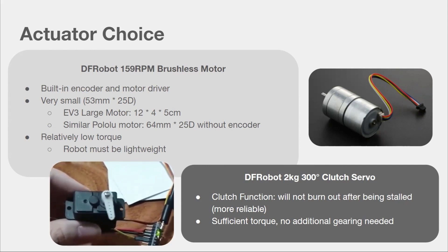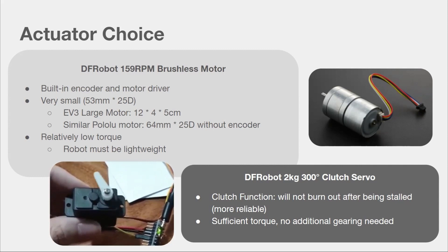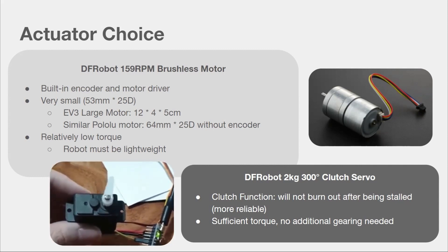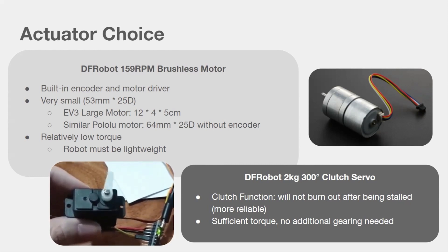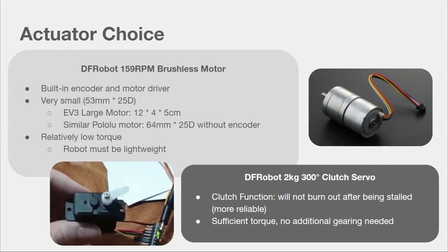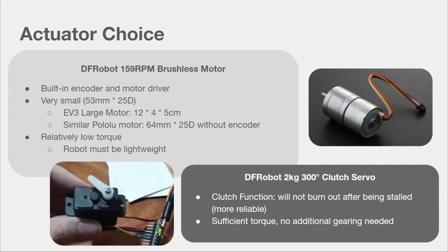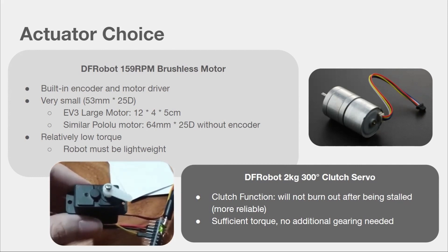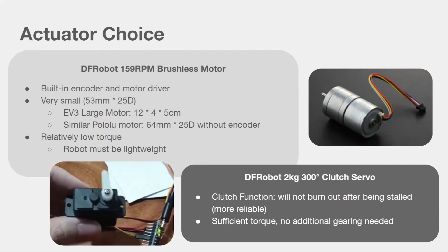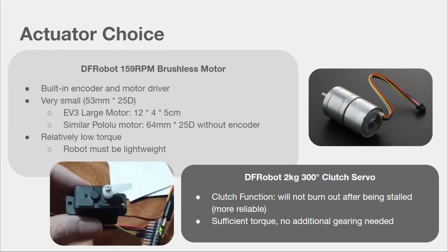For movement, we used this DFRobot motor because it's small and has a built-in encoder and motor driver, so we would not have to create extra space for them or add wiring. But they are relatively low torque, so we had to make sure everything else in the robot was as light as possible. For our claw mechanism, we used this DFRobot clutch servo. Normally servos have to be stopped to grip objects tightly, but this can create heat and cause them to fail. Clutch servos won't burn out when being stopped, making them more reliable. They also have more than enough torque to grip the objects, so we don't have to add bulk and complexity like last year.